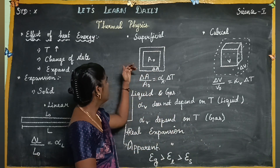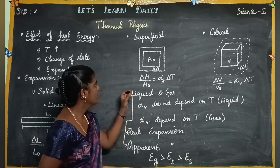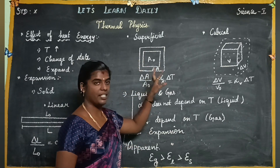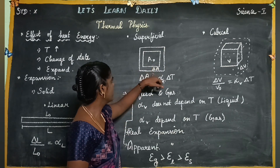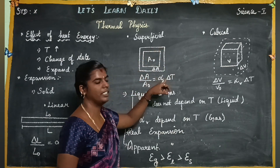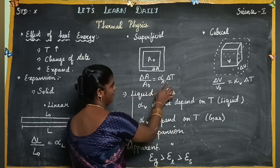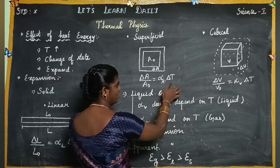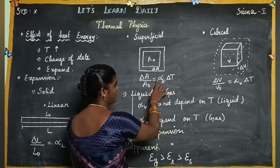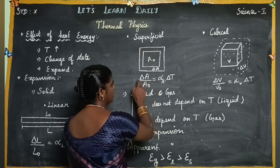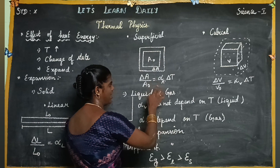Next is the superficial area — the area expands. So delta-A divided by A-naught equals alpha-A times delta-T. Delta-T is increase in temperature. Alpha-A is the coefficient of superficial expansion. Delta-A is the change in area, and A-naught is the actual area.